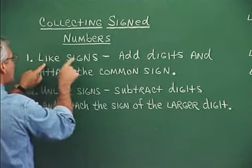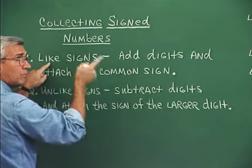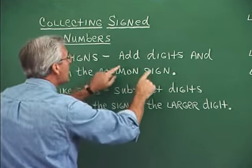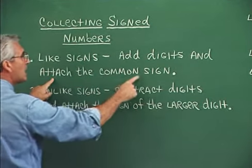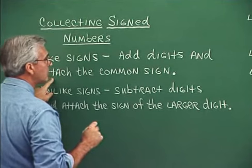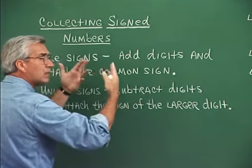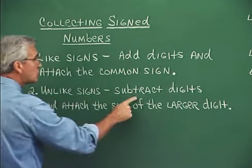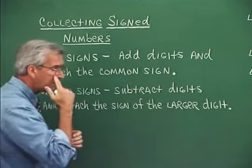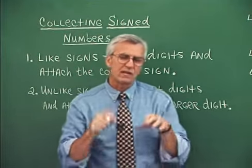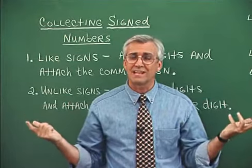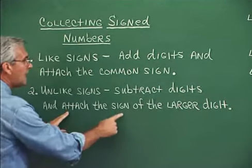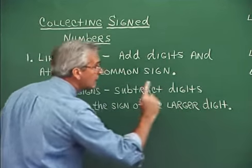We disassociate ourselves from the sign for a moment, add the digits, and then attach that common sign. If both signs are positive or both are negative, add the digits and attach the common sign. When we have unlike signs, we subtract digits — just look at the digits and take the small digit from the large digit. Then we attach the sign of the larger digit. Let's look at some examples.